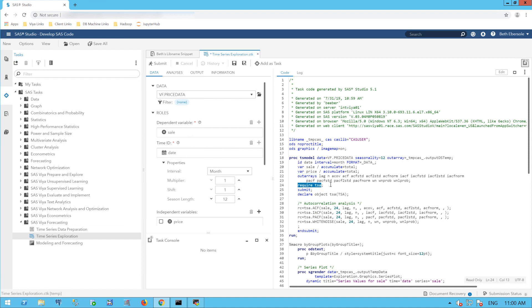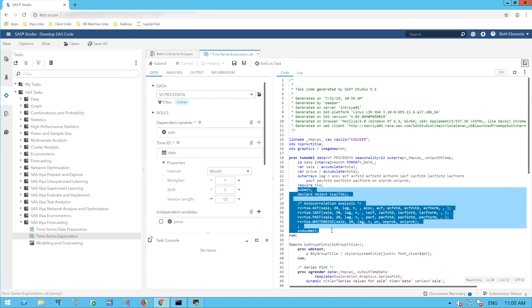I see here Require TSA, so I'll do a time series analysis. And here, between my Submit and End Submit, I have my user-defined code. You can see that in this PROC TSA model, I'll create the information I need for my autocorrelation plots, but it will not actually create those plots. I'll need to do that with PROC TSG Render below.